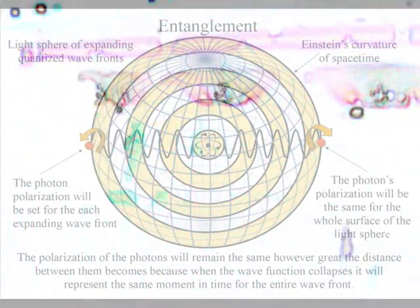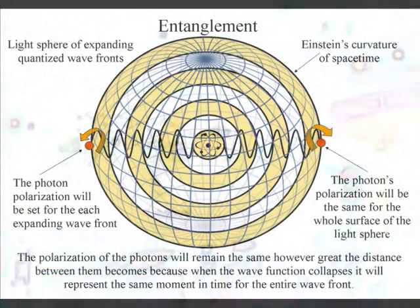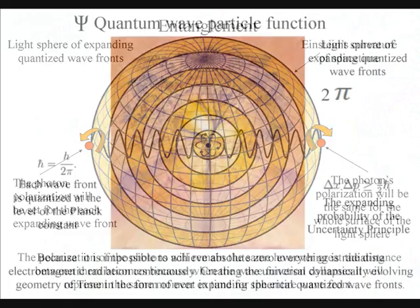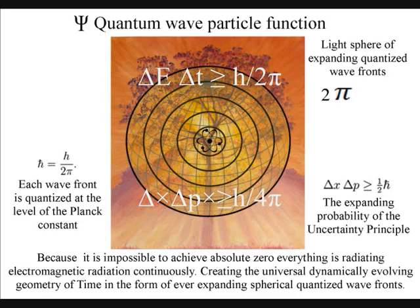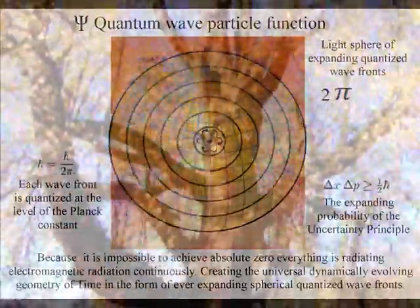Two quantum particles that are created together are entangled. The polarizational spin will be connected however great the distance between them becomes. In a new theory called quantum atom theory, this problem can be explained. Light has symmetry and geometry that forms Einstein's curvature of space-time, creating quantum entanglement.